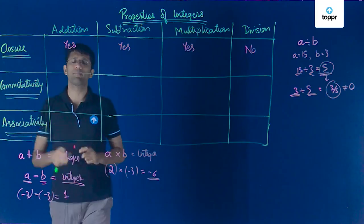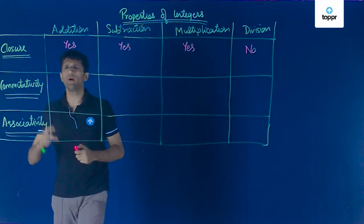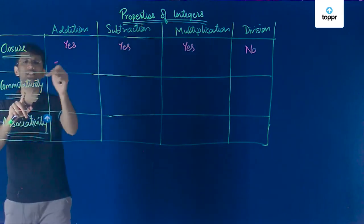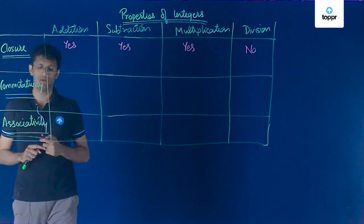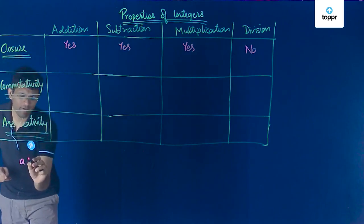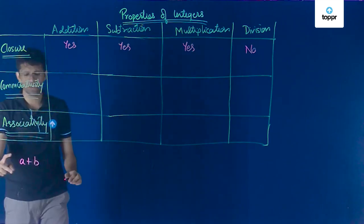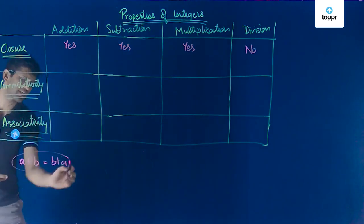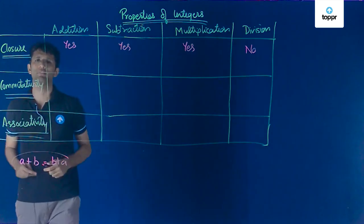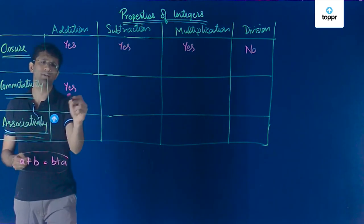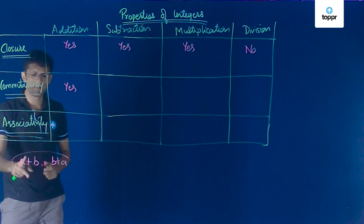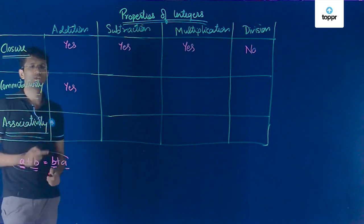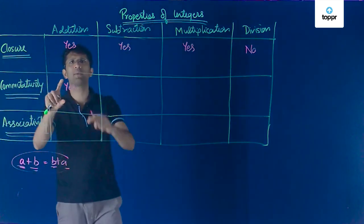Let us now look at the commutativity property. We will check if addition is commutative for integers. In addition, whenever we have two integers a and b, then a + b is always the same as b + a. Because a + b equals b + a, we say that addition is commutative for integers.